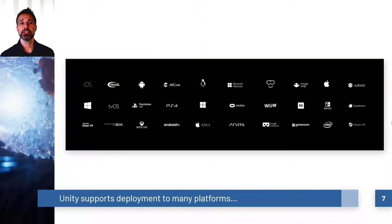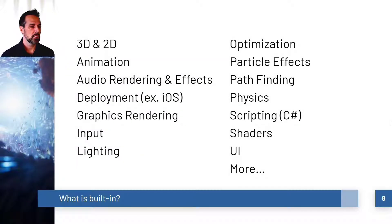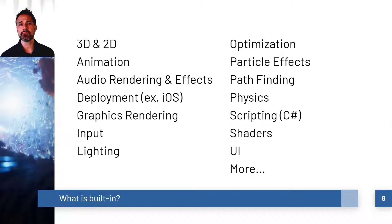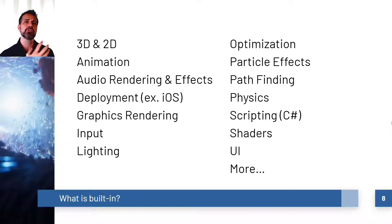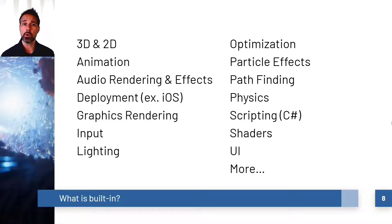Unity supports deployment on so many platforms. What's built into Unity? Unity has 2D and 3D rendering of graphics, audio rendering as well, everything you'd want from input and output. There's a physics system that we can tap into with or without code, and there's a full C-sharp scripting API.